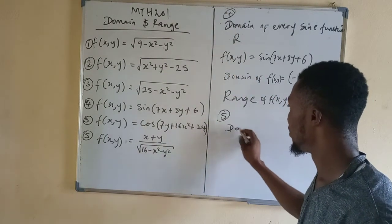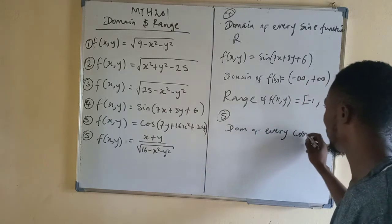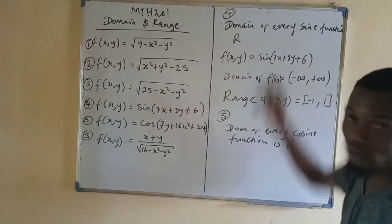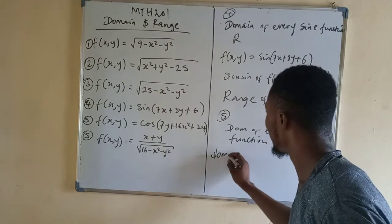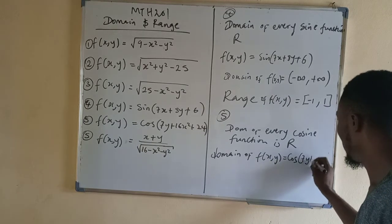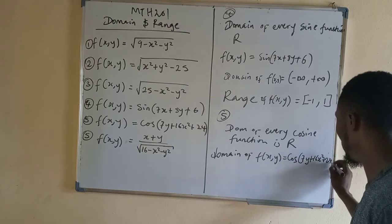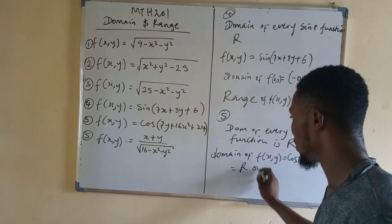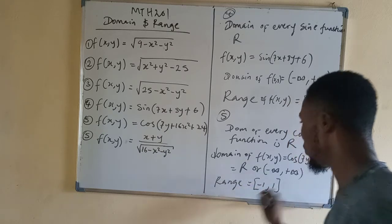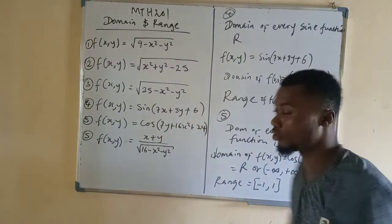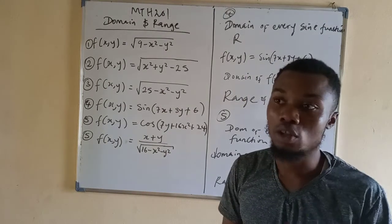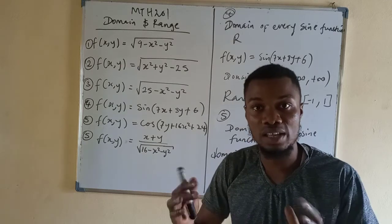Number 5: the domain of every cosine function is the same thing as the domain of every sin function. So the domain of f(x,y) equal to cos(7y plus 16x squared plus 24) is equal to all real numbers, or from negative infinity to positive infinity. The range is from negative 1 to 1. So the domain and range of sin and cos functions are the same: domain is all real numbers, range is from minus 1 to 1.